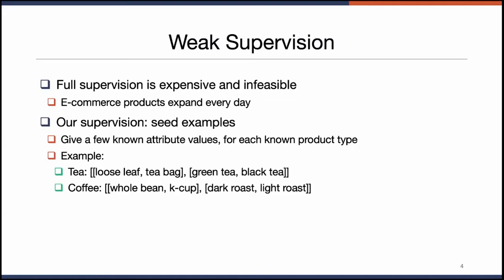In this challenging problem setting, it is very expensive or may not even be feasible to build a fully supervised model, because of the forever expanding product catalog. So here we focus on a weak supervision setting, where our supervision is seed examples — a few known attribute values for each known product type. For example, for tea products, we may tell the model we have an attribute with values loose leaf and tea bag.